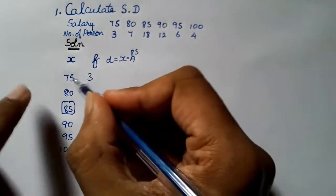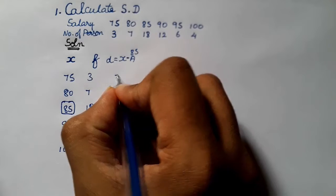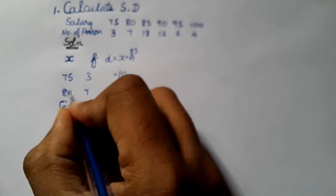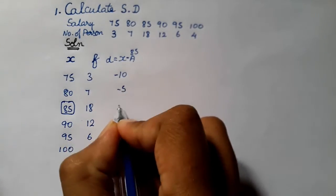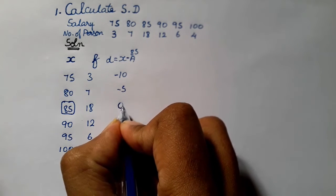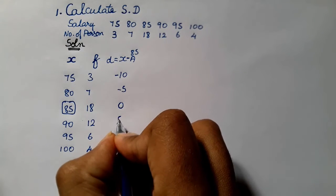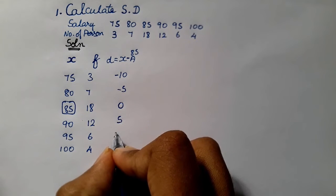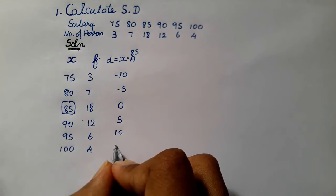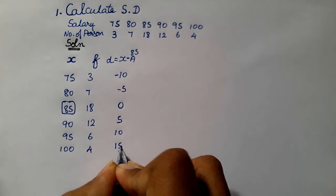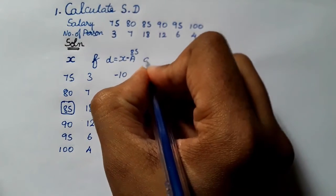Now calculating D values: 75 minus 85 is minus 10. 80 minus 85 is minus 5. 85 minus 85 is 0. 90 minus 85 is 5. 95 minus 85 is 10. 100 minus 85 is 15.